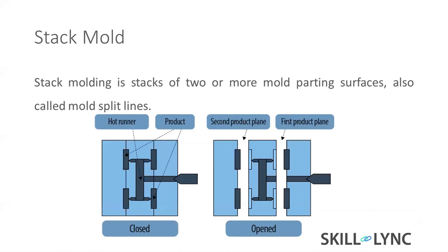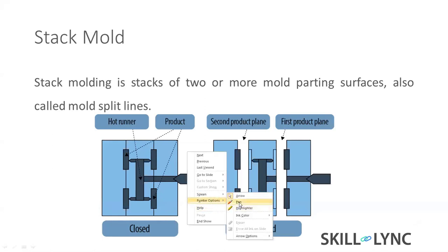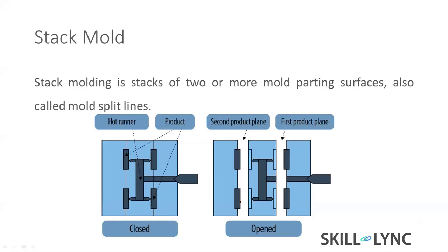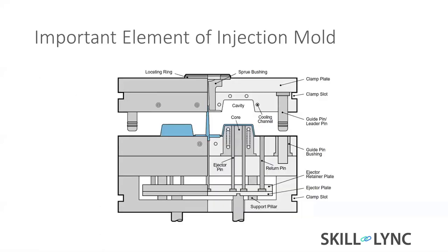Stack molding is mainly used for multiple parts. Some parts have 64 cavities, so in a single shot it will eject almost 64 to 128 parts. The cavities are arranged in a stacked way - one above another - that is why it's called stack molding. The biggest advantage is we can produce a lot of parts with very less clamping force.